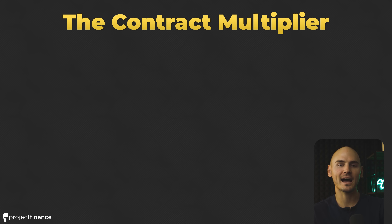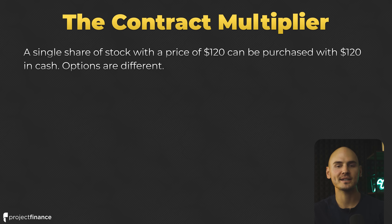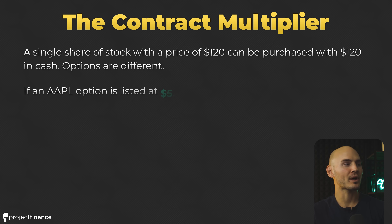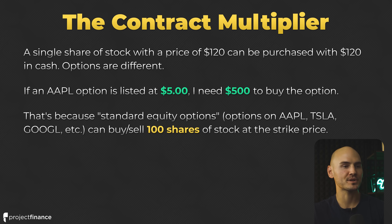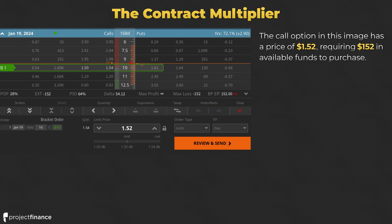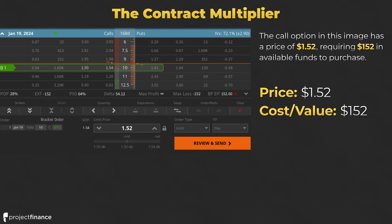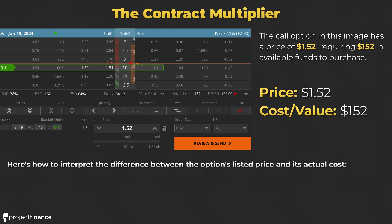The third thing we need to talk about is the option contract multiplier. A single share of stock priced at $120 can be purchased with $120 in cash. But options are different. If an Apple option is listed at a price of $5, you actually need $500 to buy the option. Standard equity options — such as options on Apple, Tesla, or Nvidia — can buy or sell 100 shares of stock at the strike price. This 100 shares is the option's contract multiplier. The call option has a listed price of $1.52, but the buying power needed to purchase this contract is $152.